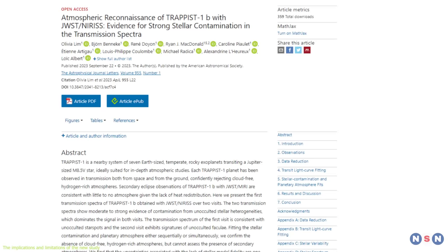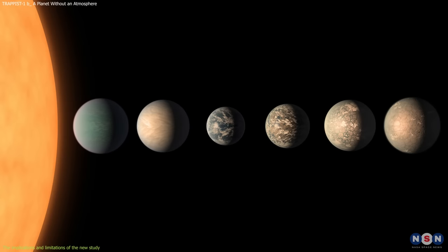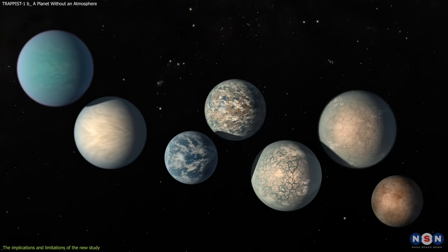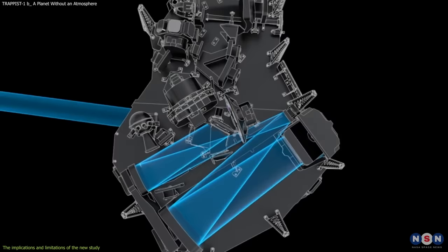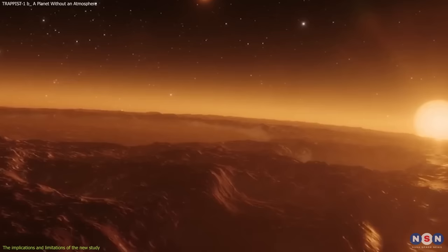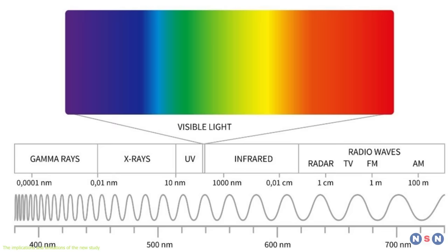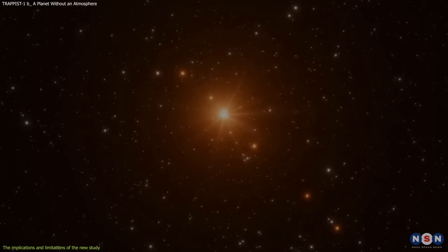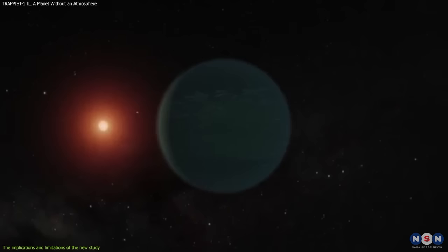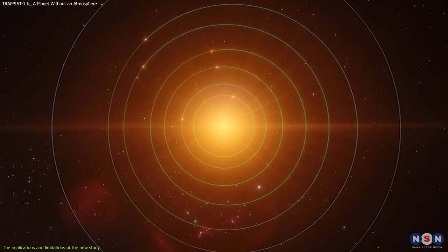However, the study also faces some challenges and uncertainties that affect its conclusions. For one thing, they only observed one planet in the system, TRAPPIST-1b, which may not be representative of the other planets. For another thing, they only observed a limited range of wavelengths with NIRSPEC and MIRI, which may not capture all possible atmospheric features. For example, some gases or molecules may have stronger signatures at other wavelengths, such as visible or ultraviolet light. Moreover, the study had to deal with a lot of noise and variability from the star's activity, which may have masked or distorted some signals from the planet.